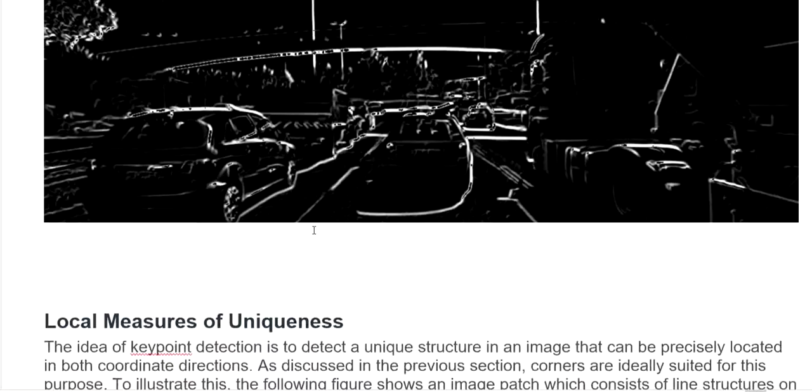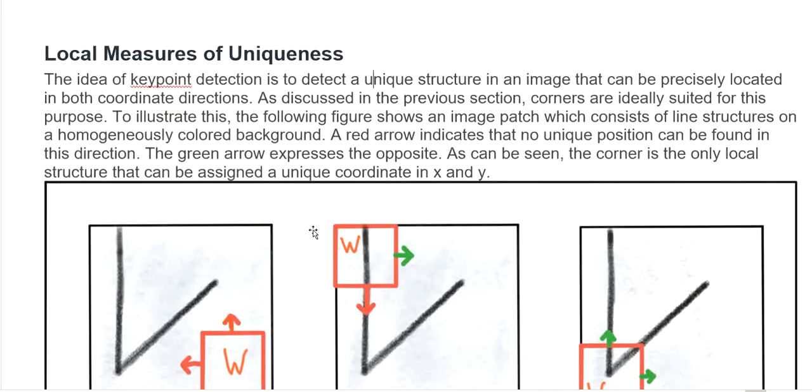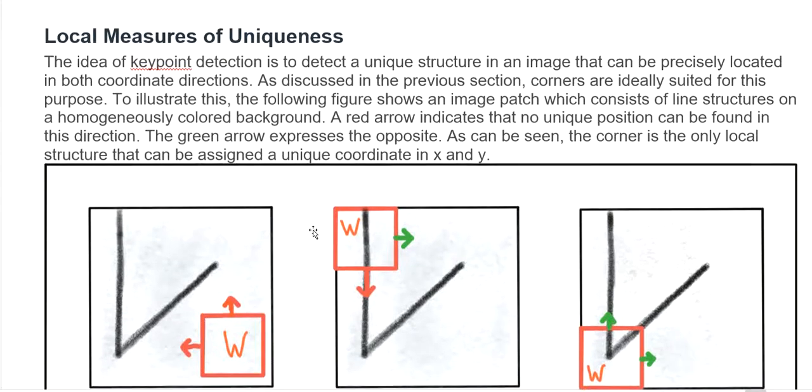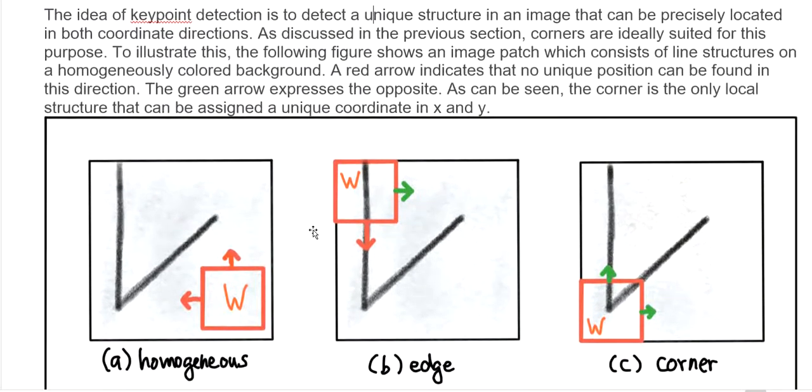We are talking about key point detectors, and one of the famous detectors is the Harris corner detector — how to detect corners in an image. In the last video, you already learned about Sobel X and Y in the X and Y direction, how they change the gradient of the picture, how we apply Sobel with Gaussian smoothing to reduce noise and see the change in gradient in the X and Y direction. Key point detection takes unique structures in the image that can be precisely located in both X and Y coordinates.